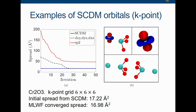Here is an example. If you already know the orbitals you are interested in — dxy, dyz, dxz — and start from there, the initial spread is about 70 Ångström squared, and after 30 iterations it converges. If you start from a wrong guess, say SP2 — of course it's wrong, but the point is it should be robust — you can see that it gets stuck and never converges even after a thousand iterations.